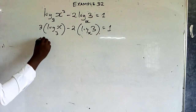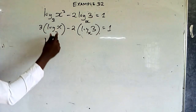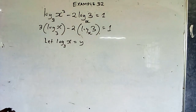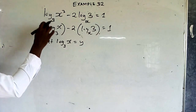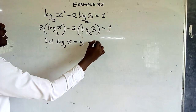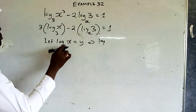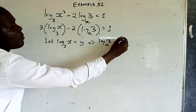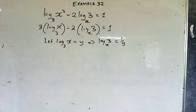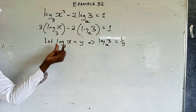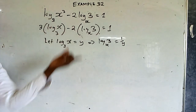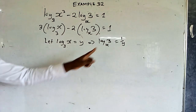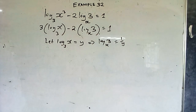We let log x to base 3 equal y. Then log 3 to base x is the reciprocal, which is 1 over y, because log x to base 3 equals log x over log 3, so its reciprocal is log 3 over log x, which equals 1 over y.